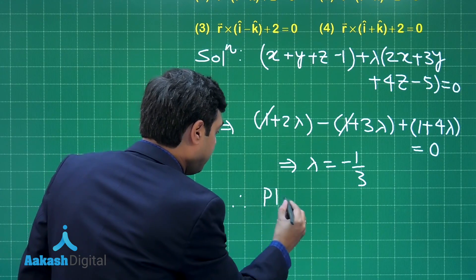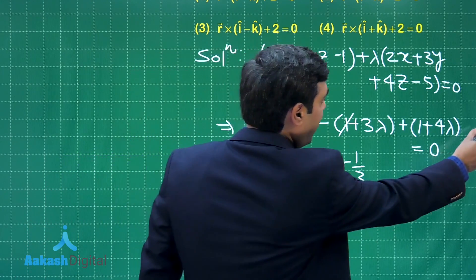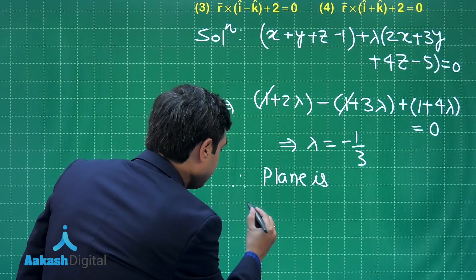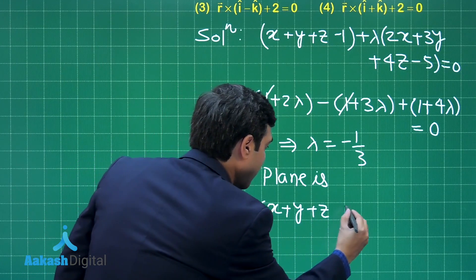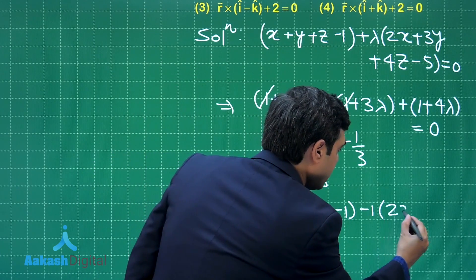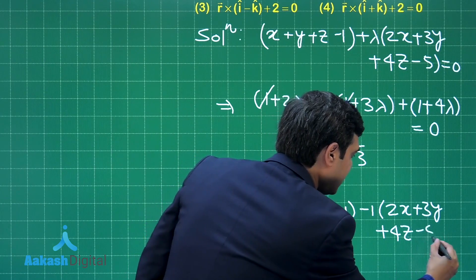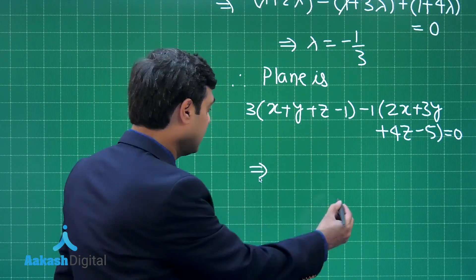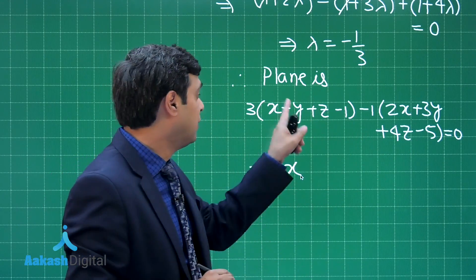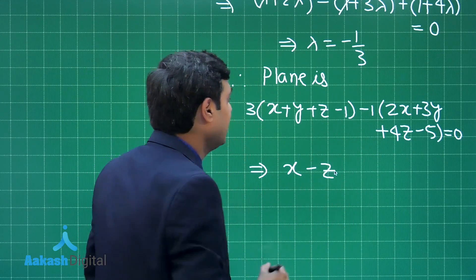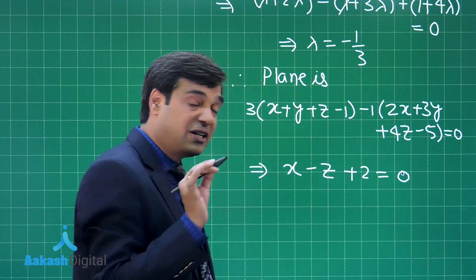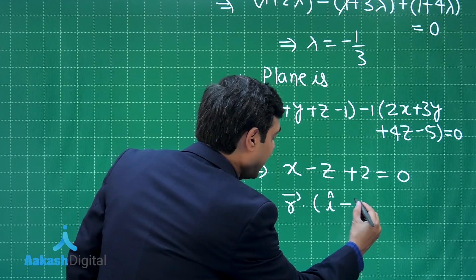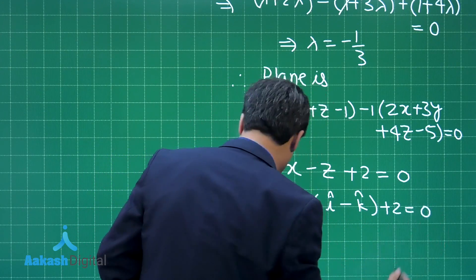Substituting lambda equals minus 1 by 3 back into the equation of the plane, taking LCM of 3: 3 times (x plus y plus z minus 1) minus 1 times (2x plus 3y plus 4z minus 5) equals 0. Simplifying: 3x minus 2x gives x, 3y minus 3y cancels, 3z minus 4z gives minus z, and minus 3 plus 5 gives plus 2. The vector equation can be written as r dot (i-cap minus k-cap) plus 2 equals 0.